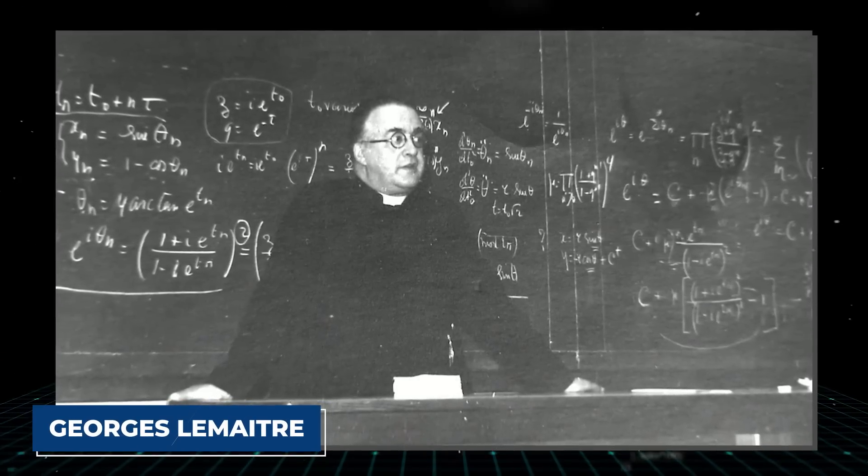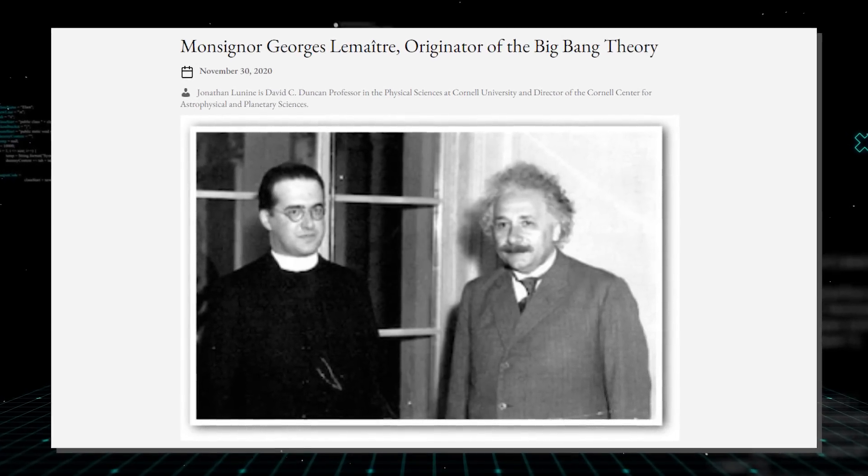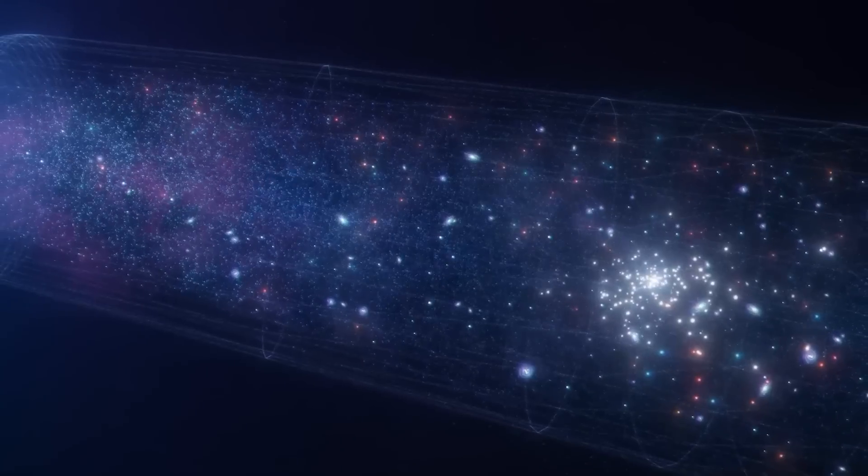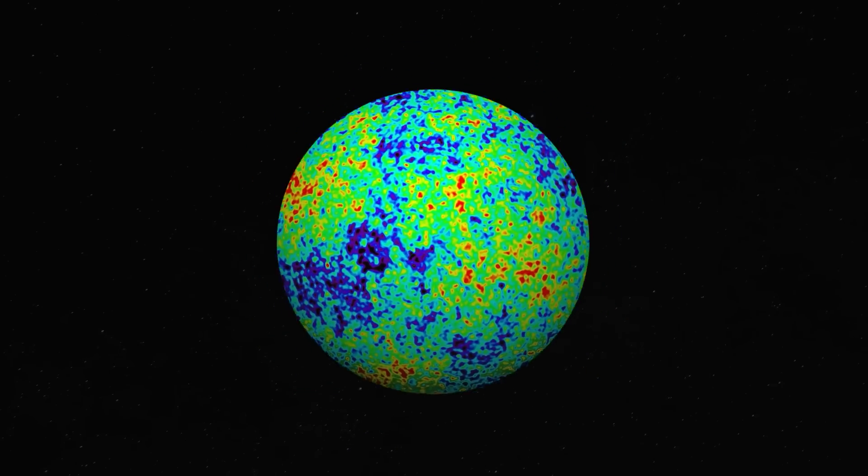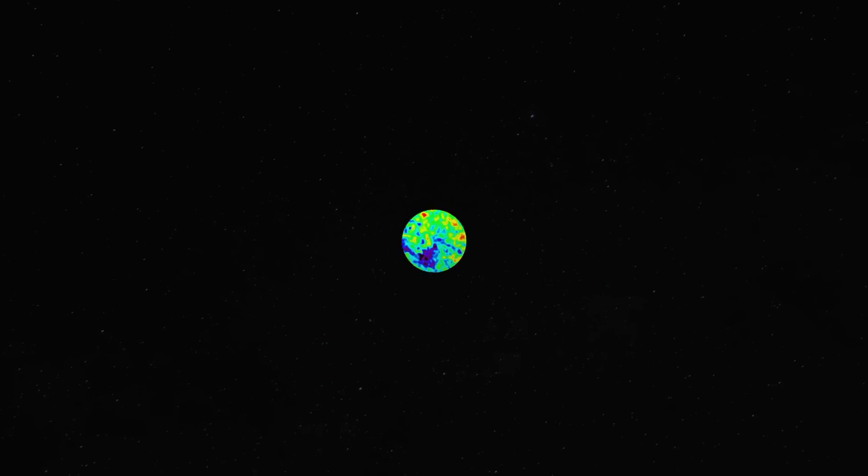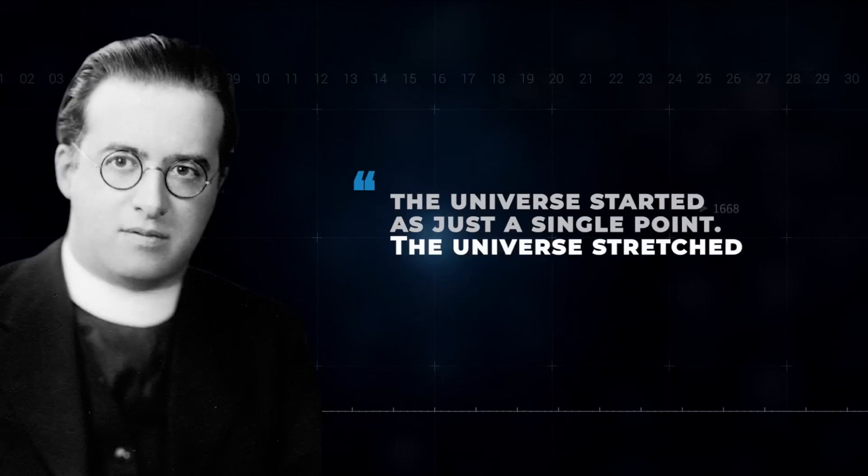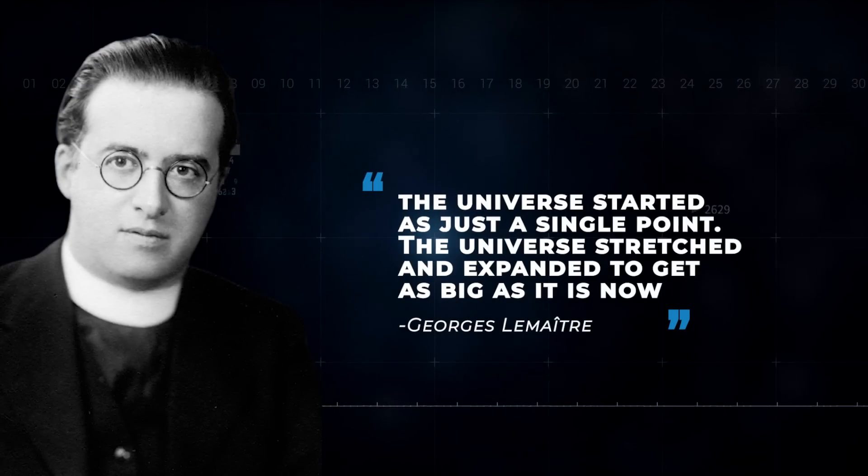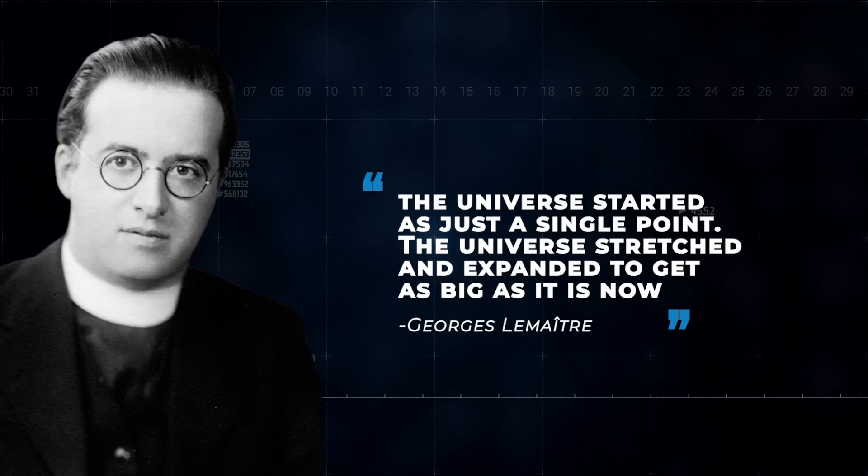independently arrived at the same results as Friedman's equations and proposed that the inferred recession of the galaxies was due to the expansion of the universe. He expanded on this by suggesting that the current expansion of the universe meant that the farther back in time one went, the smaller the universe would be. If you follow his thought, you will arrive at a point in the distant past when the entire mass of the universe would have been concentrated into a single point from which the very fabric of space and time originated. That was basically the Big Bang.